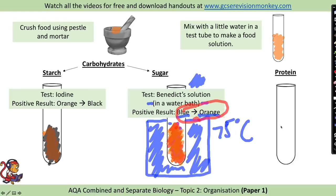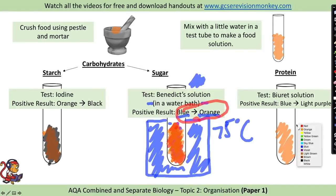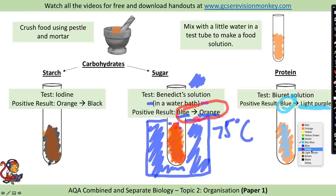To test for protein, add a food sample into a test tube and add biuret solution, which is a light blue solution. A positive result — indicating protein is present — is a colour change from blue to purple.